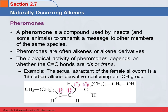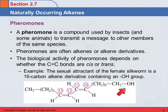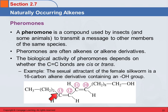The biological activity of the pheromone depends on whether that double bond is cis or trans. So as an example, here's the structure for the sexual attractant of the female silkworm. It's a 16-carbon alkene derivative with an OH group, which is why it's a derivative. It's got two double bonds, and each carbon of those double bonds has two different things attached, so there's cis and trans going on at both.